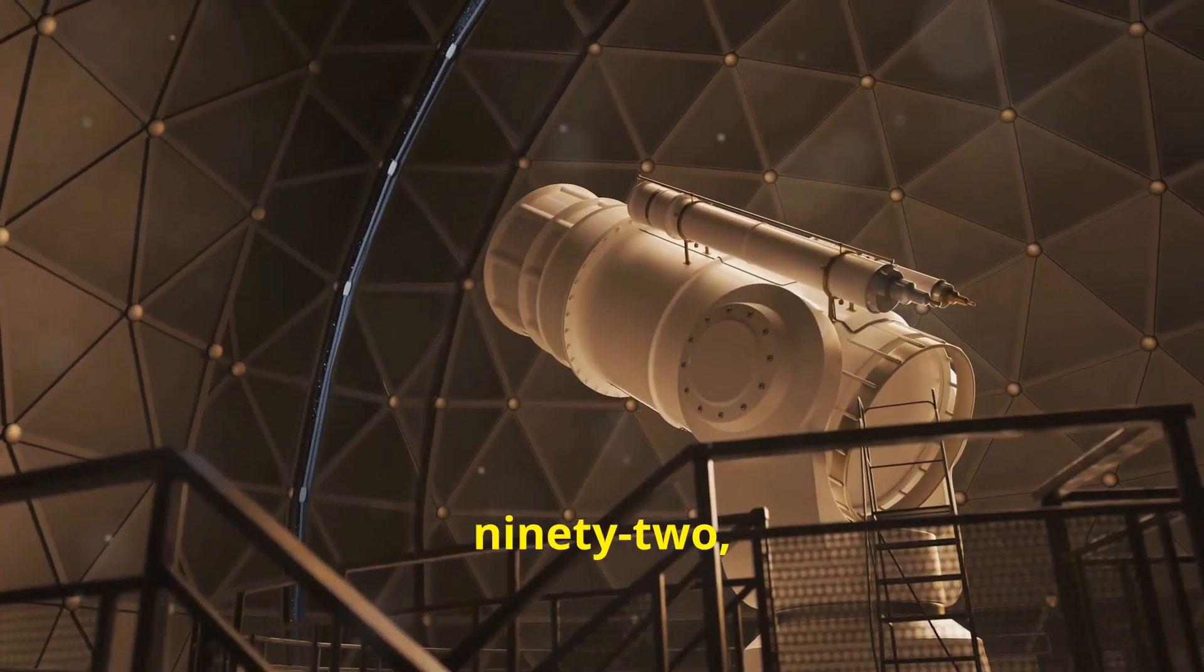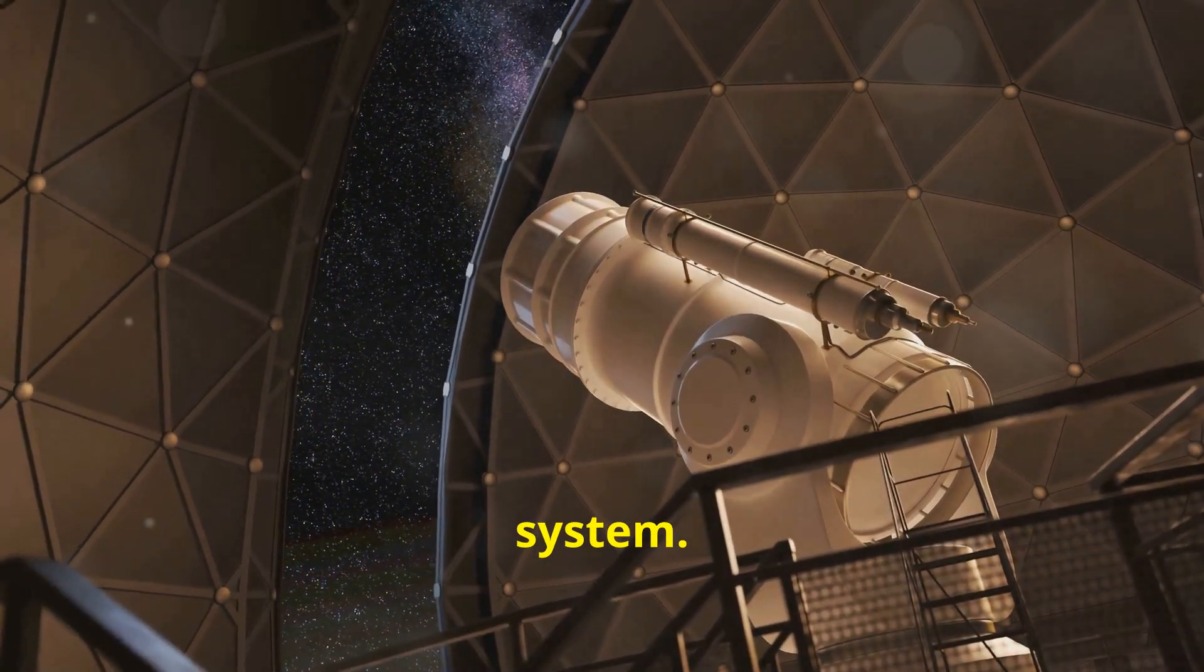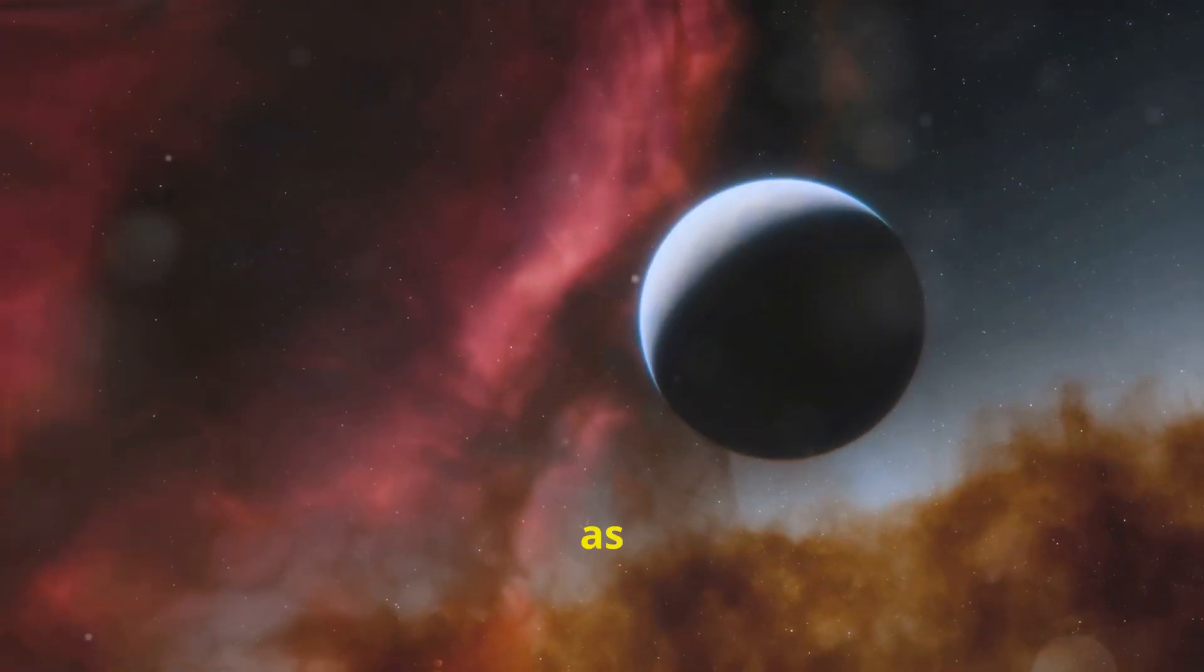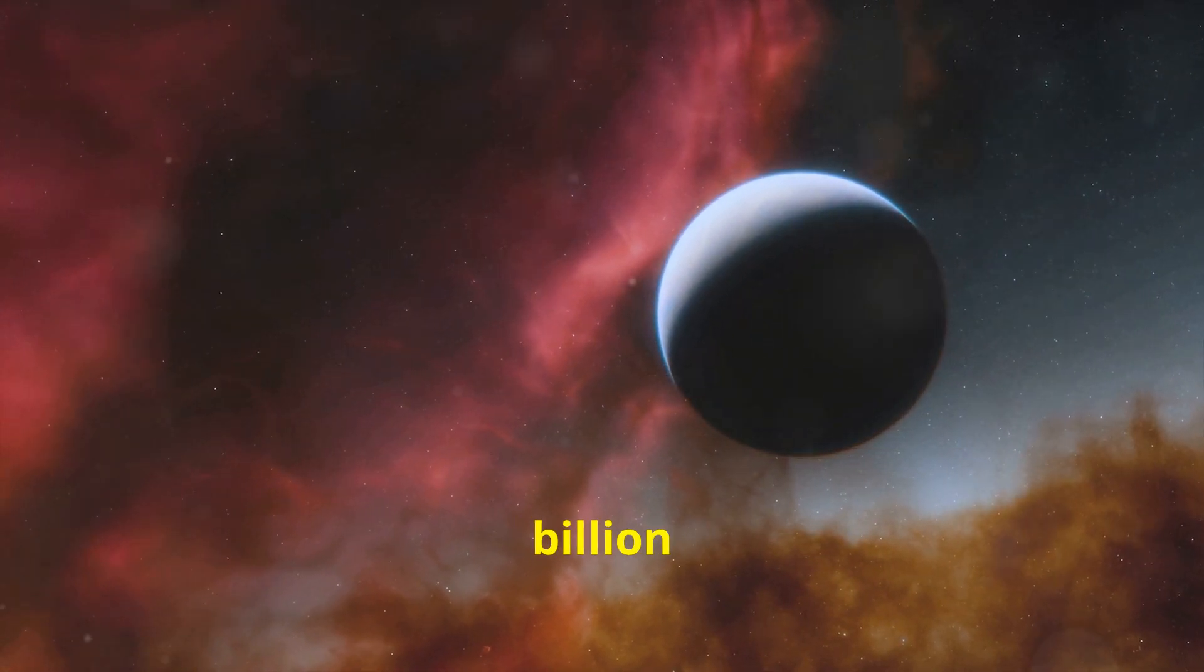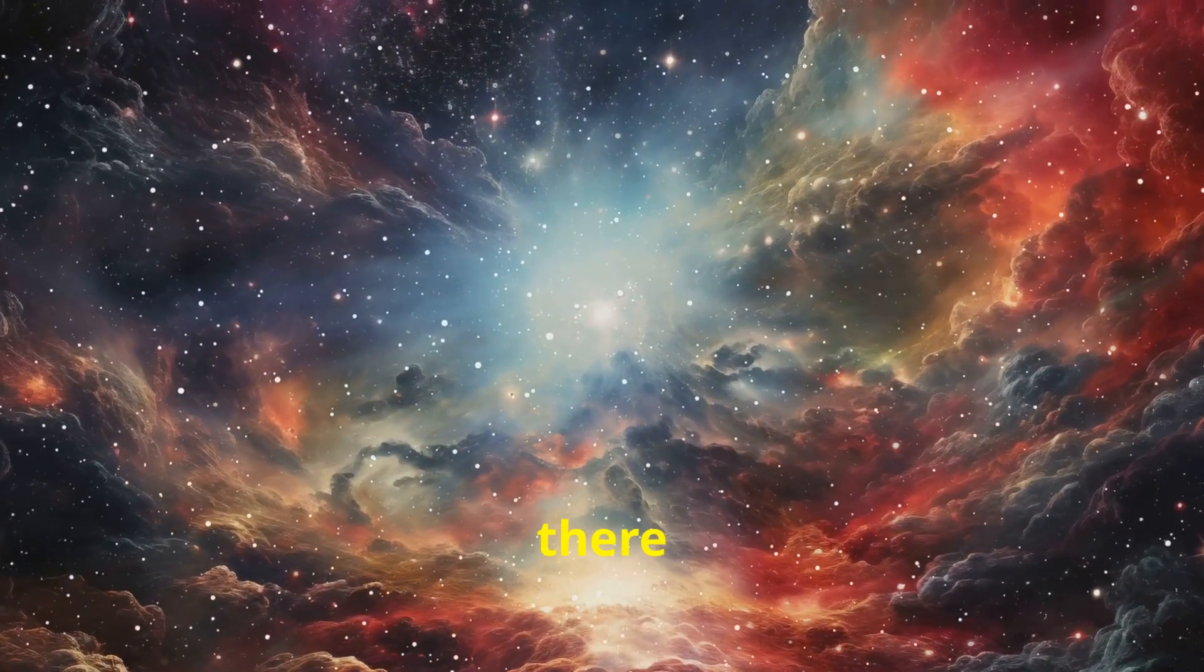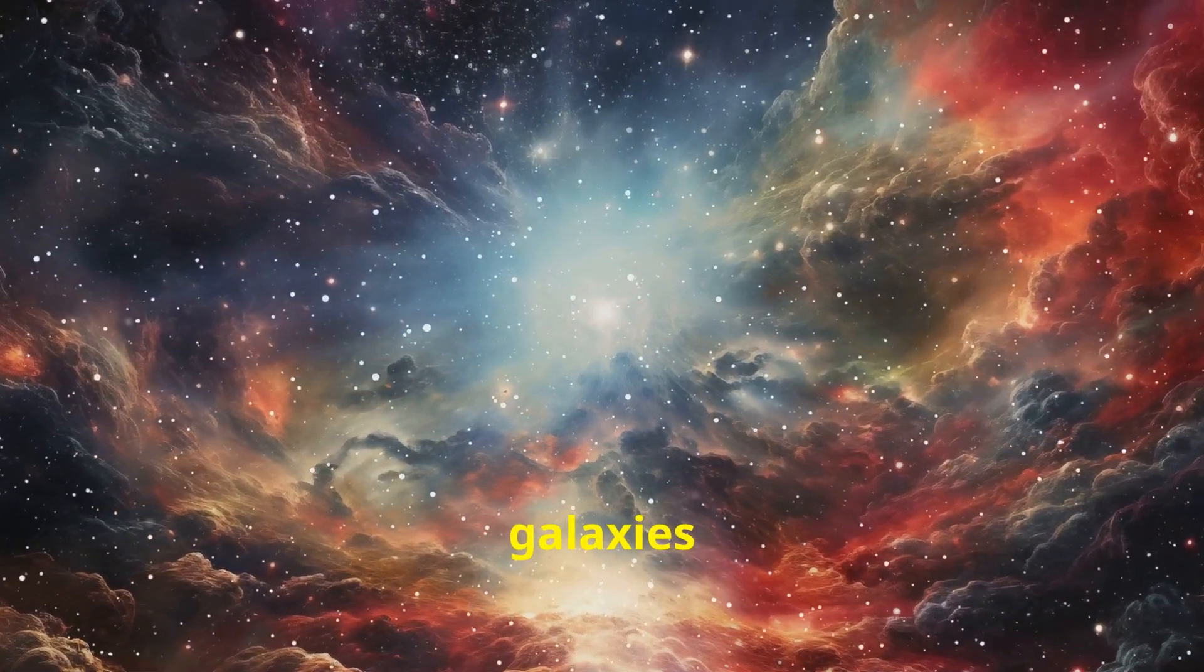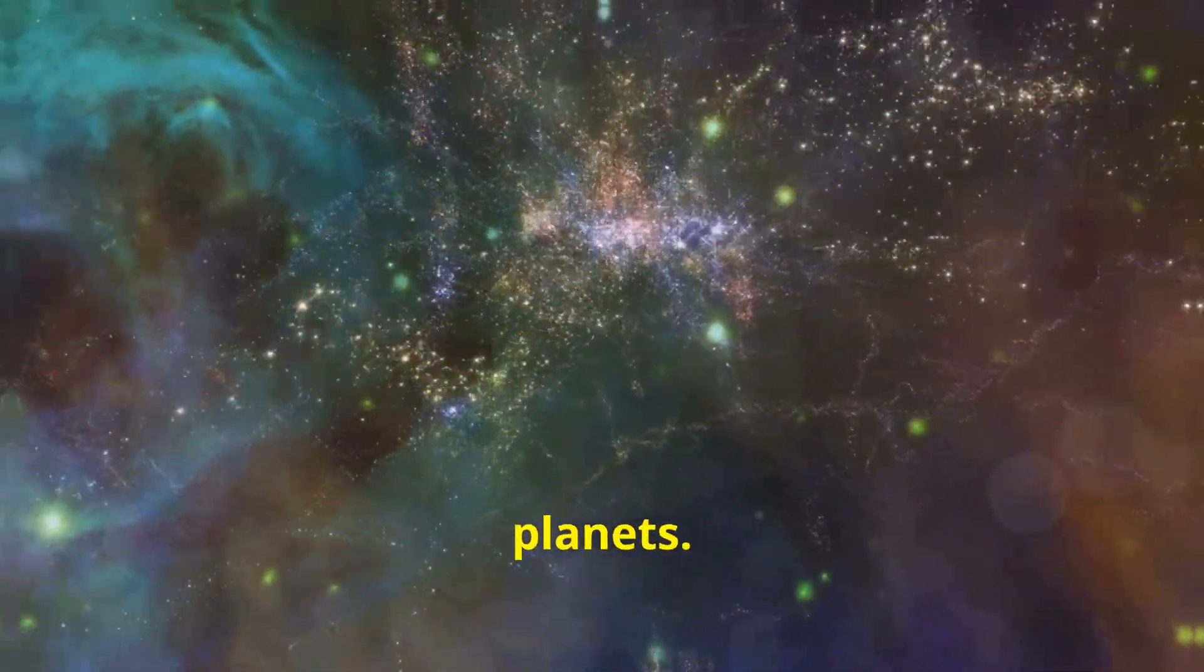Before 1992, humanity didn't even know for sure if there were other planets outside our solar system. But there are. Known as exoplanets, it's now estimated that there are around 200 billion planets in our galaxy alone. It's also estimated that there may be as many as 2 trillion galaxies in the known universe. That makes for an estimated 20 to 100 quintillion planets.